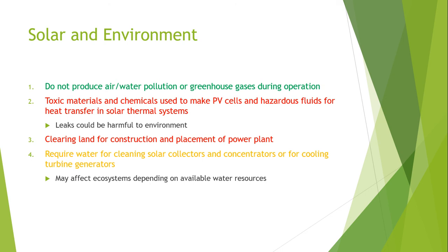According to Greenpeace and the Chinese Renewable Energy Industry Association, about two-thirds of China's solar manufacturing firms are failing to meet the national standards of environmental protection and energy consumption. The production of polysilicon and silicon wafers creates dangerous byproducts, including silicon tetrachloride and hydrofluoric acid, which are being discharged into the environment after inadequate waste treatment.